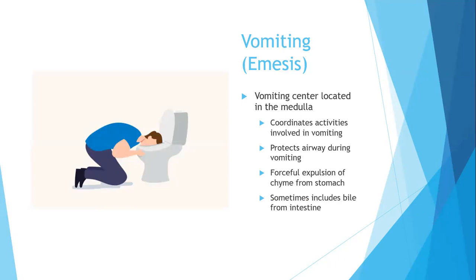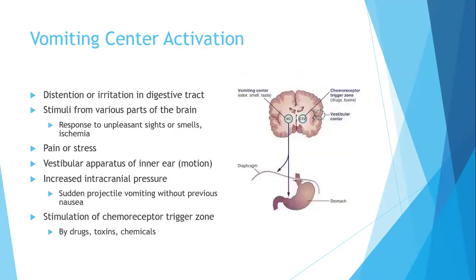Sometimes when you run out of stomach contents, vomiting can include bile from the intestine. If you've ever had norovirus with a lot of vomiting, you run out of food in your stomach and then you're vomiting up bile — that yellow substance from the intestine. The vomiting center can be activated by distension or irritation in the digestive tract, or by unpleasant odors, smells, tastes, or ischemia in the brain.